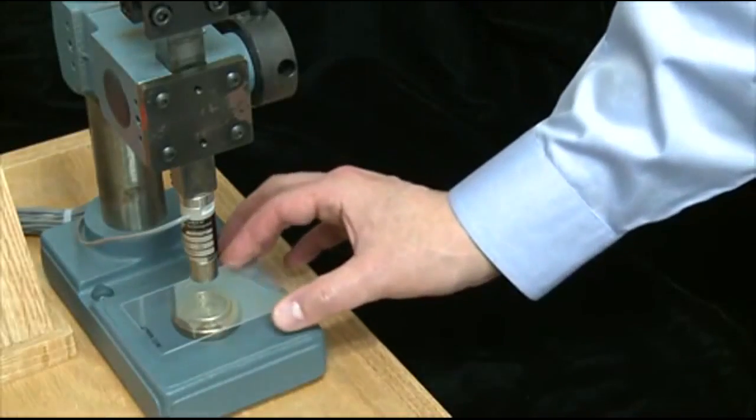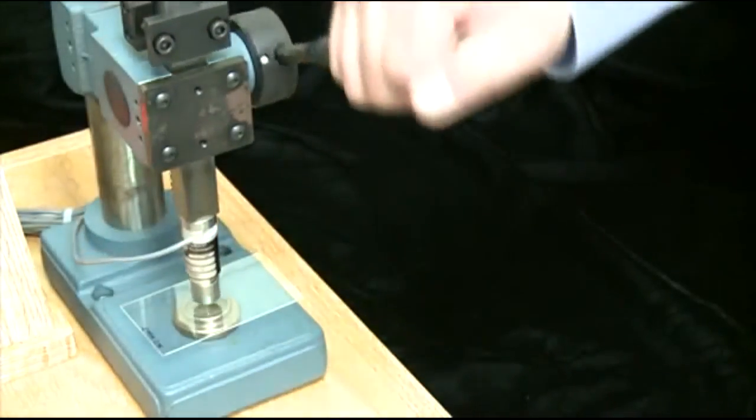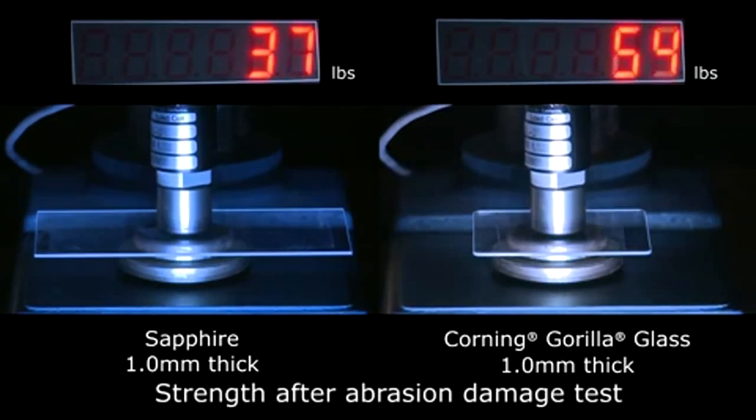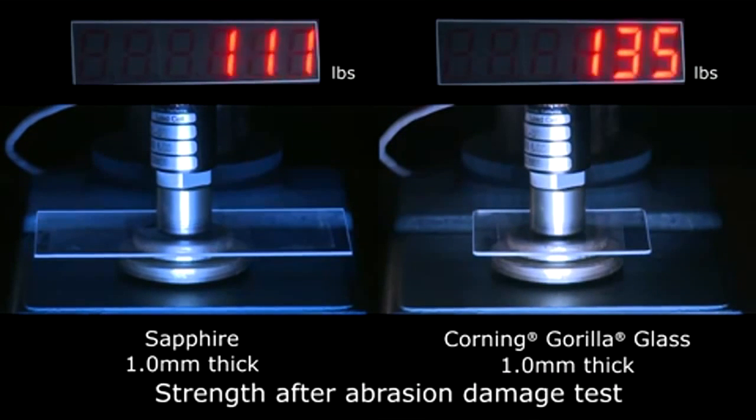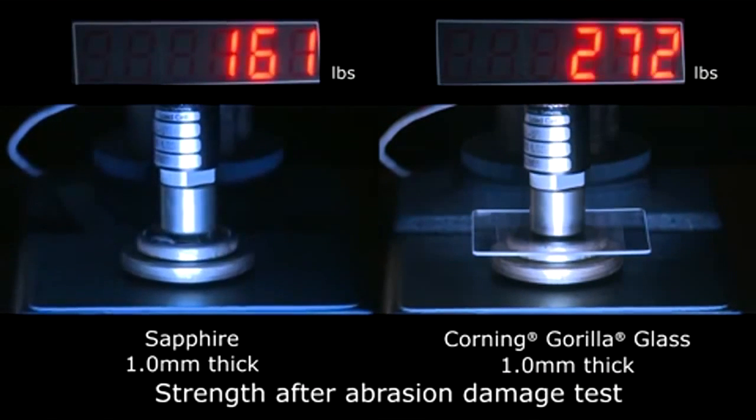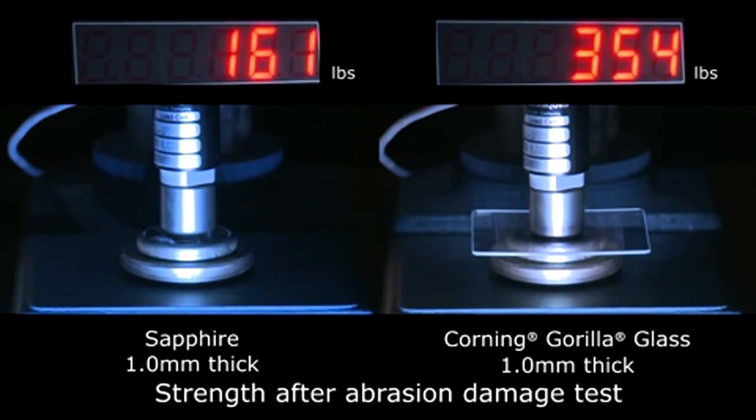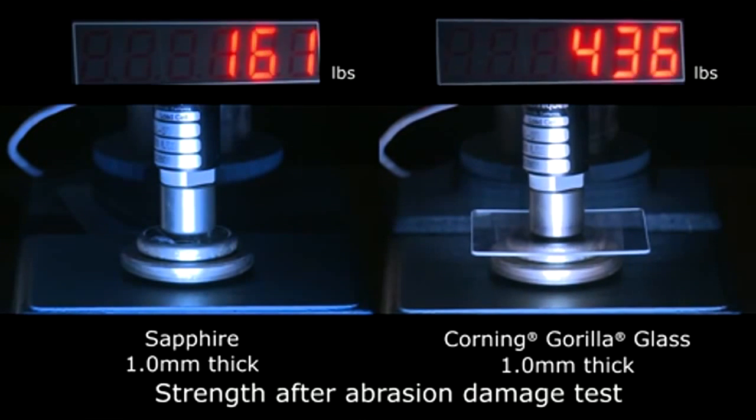When finished, the samples are removed and loaded into a ring-on-ring strength test. The meter indicates the number of pounds pressing down on the sample. Here, the sapphire breaks at 161 pounds. The Gorilla Glass withstands over two-and-a-half times as much force.